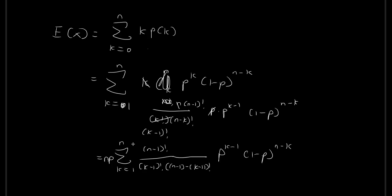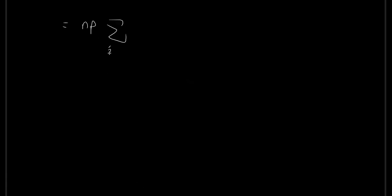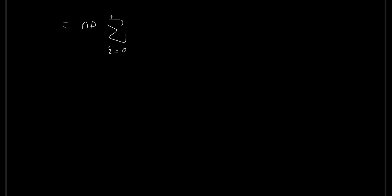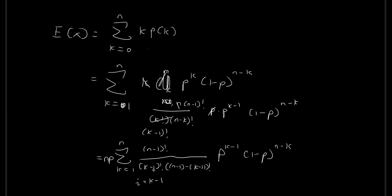Continuing with our proof, we have np outside the summation sign, and the summation is now starting at k equals 1. What I want to do is define a new index term called i, where i is equal to k minus 1. So if k equals 1, then i equals 0, meaning we start from i equals 0. For the ending term, k goes all the way to n, and when k reaches n, i is going to be n minus 1.